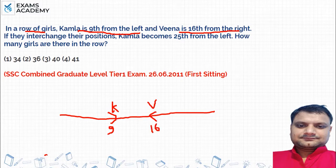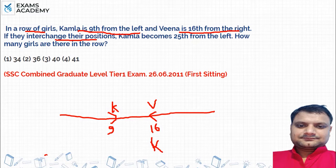If they interchange their positions, Kamala is here and Veena is here. Because they interchange the position, Kamala becomes 25th from the left.